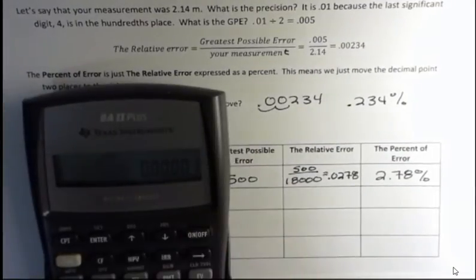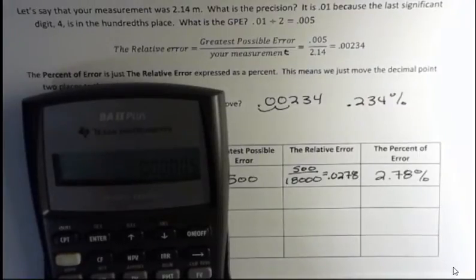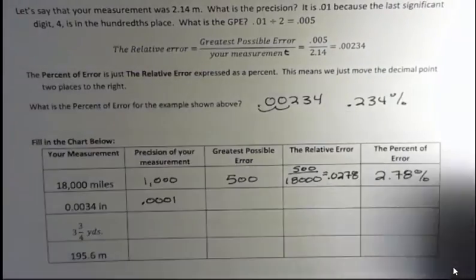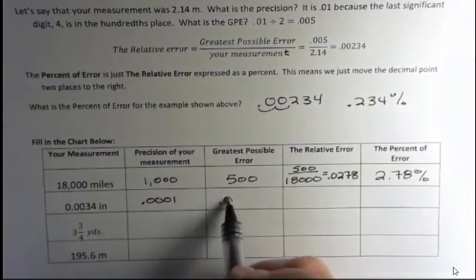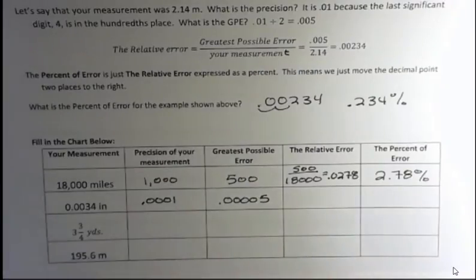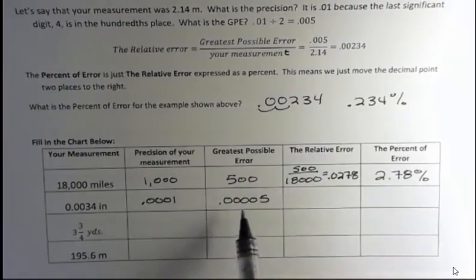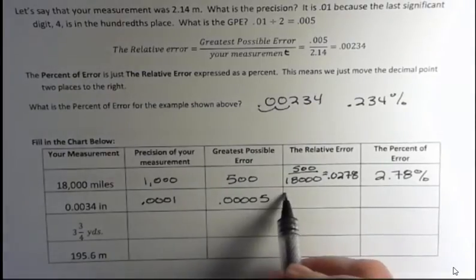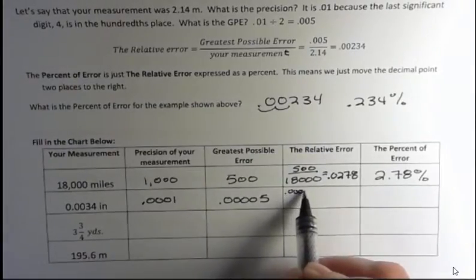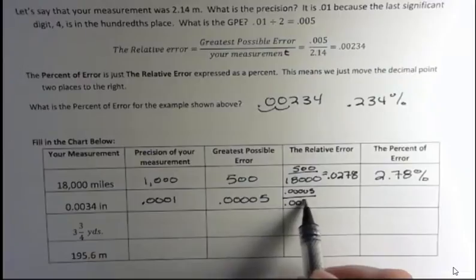Three zeros and a one divided by two is going to give us four zeros and a five. That's how that always works. Add a zero and make that last number five and that's what's going to be half of one of those decimal numbers. And now the relative error is the greatest possible error, 0.00005, divided by our measurement, 0.0034.